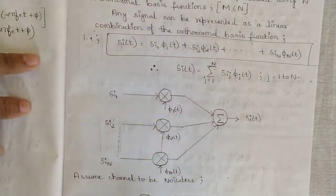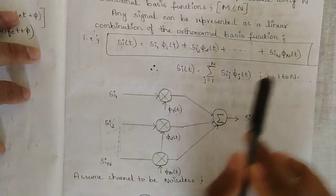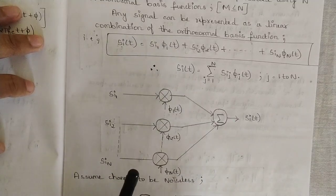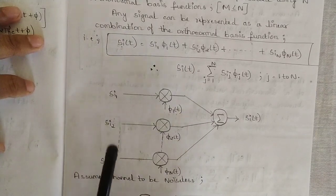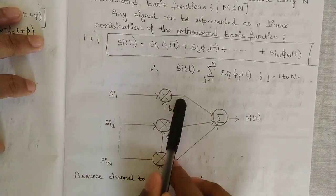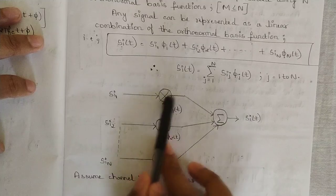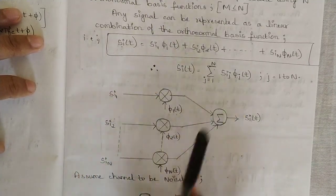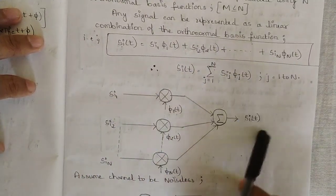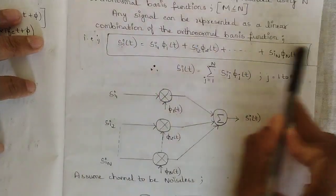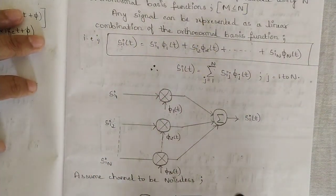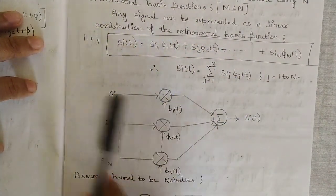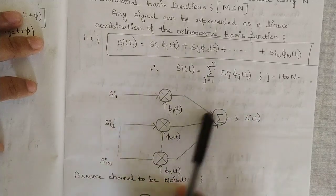For a noiseless channel, the input combinations — the energy signals s_I1, s_I2, up to s_In — are passed through multipliers phi_1 of t, phi_2 of t, up to phi_n of t. These products are all summed together to produce s_I of t. This expression is represented as a block diagram where the coefficients and basis functions are multiplied and summed.